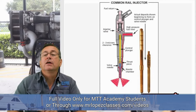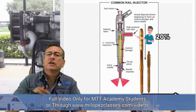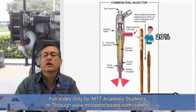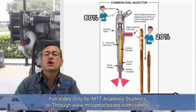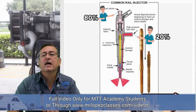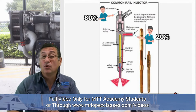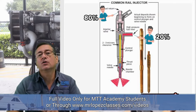In diesel engines, the fuel entering the fuel injection pump — only 20% of that fuel is used to enter the combustion chamber and produce power. The rest, 80% of the fuel, returns to the tank. All injectors have one input on one side and one return on top. Only 20% enters the combustion chamber and 80% of the fuel at high temperature returns to the tank.